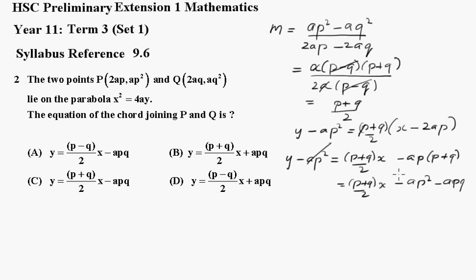These ap² terms cancel, and we get y = (p + q)/2 x - apq. And that one is C.